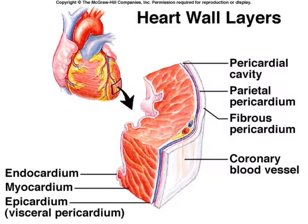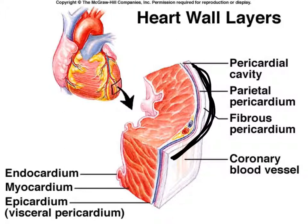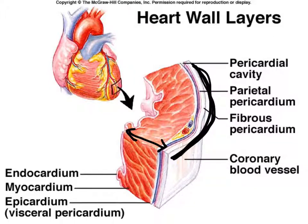To recap: the most outer layer is the epicardium or visceral pericardium. The middle and widest part is the myocardium, which is the muscular layer. The inner side is the endothelium or endocardium.